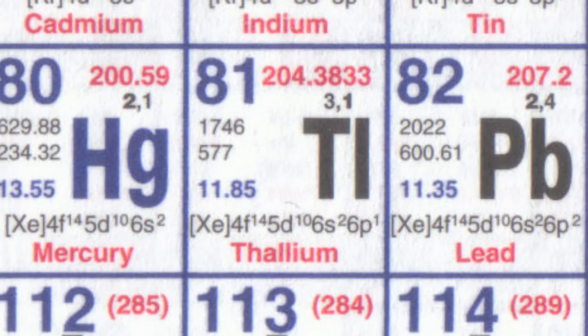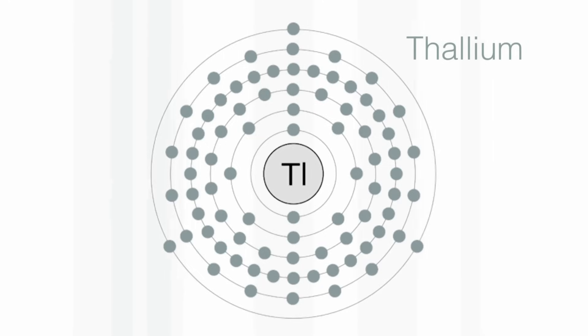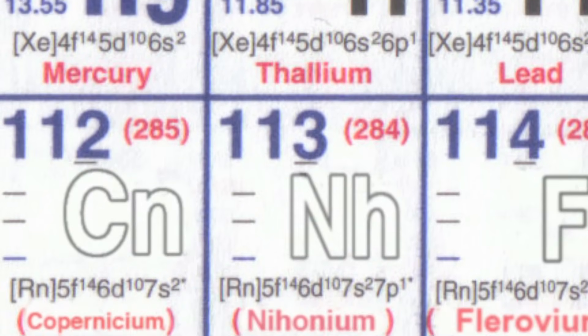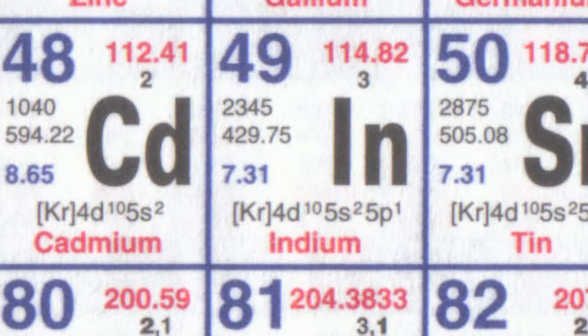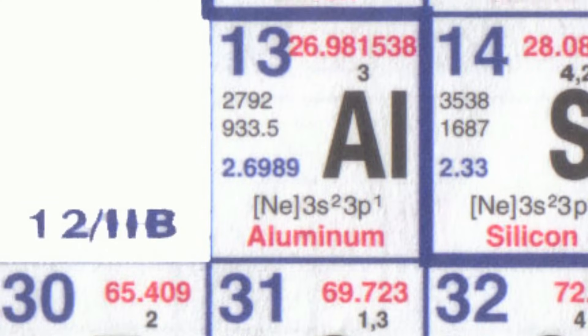One of the things that's really interesting about thallium is that it has three electrons in its outer shell. In its chemistry it can lose either one of these to make thallium plus salts, or it can lose all three. I suspect that in the chemistry of element 113, the plus one state would be even more prominent than in thallium.